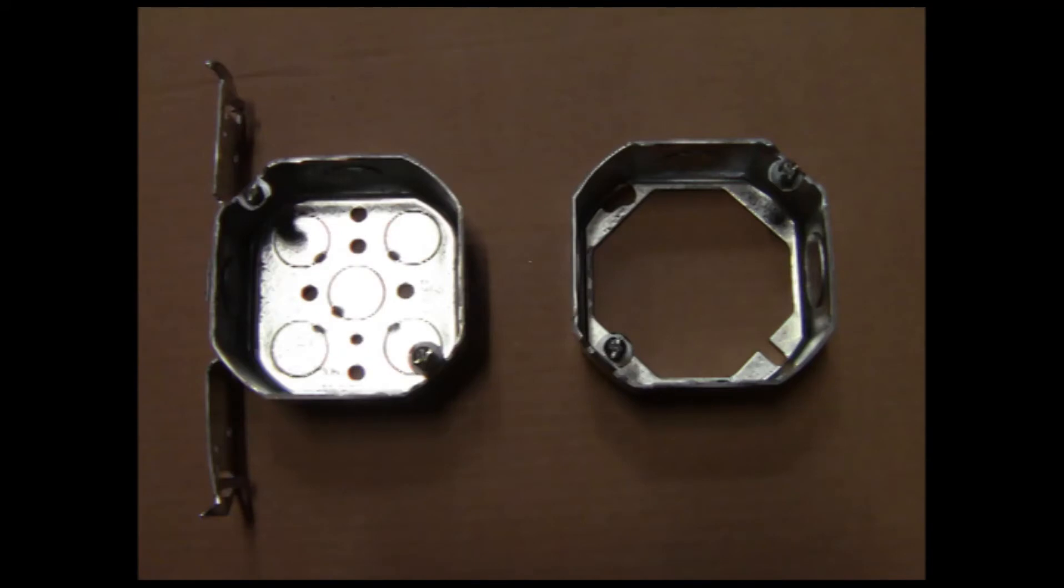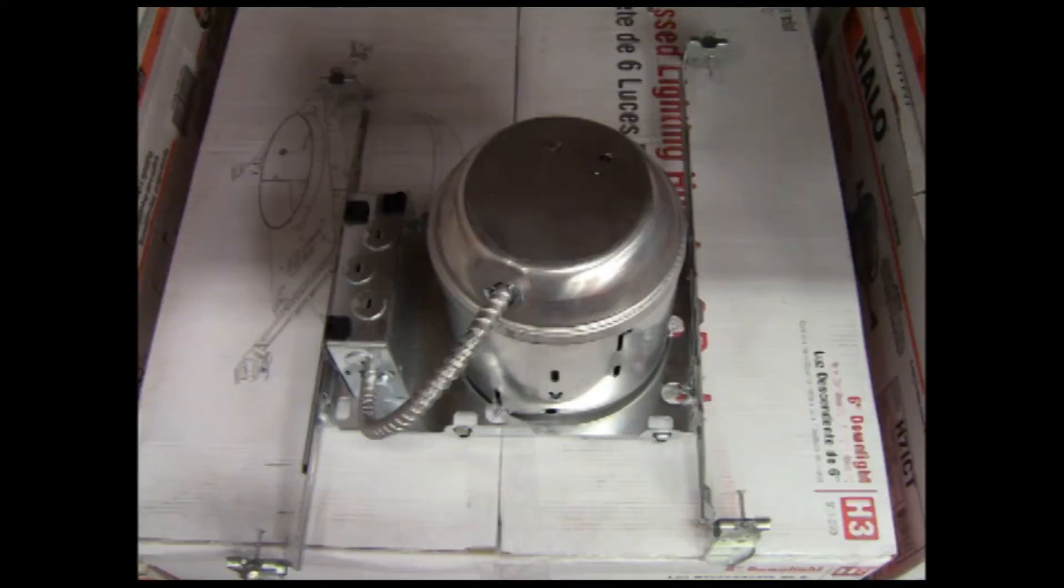And this is a standard 4.0 square screw-on light box. Next to it, you see a box extension. And what are those good for? You guessed it, recording studios and masonry applications.